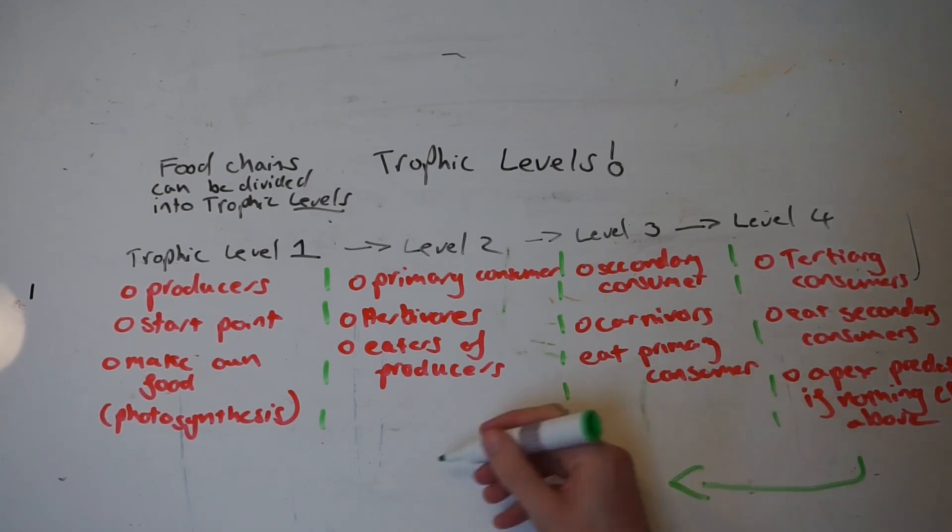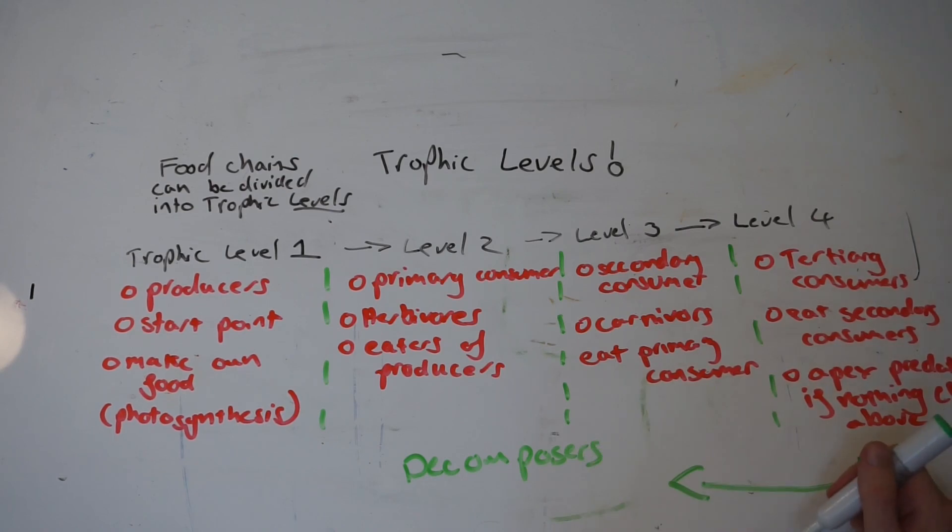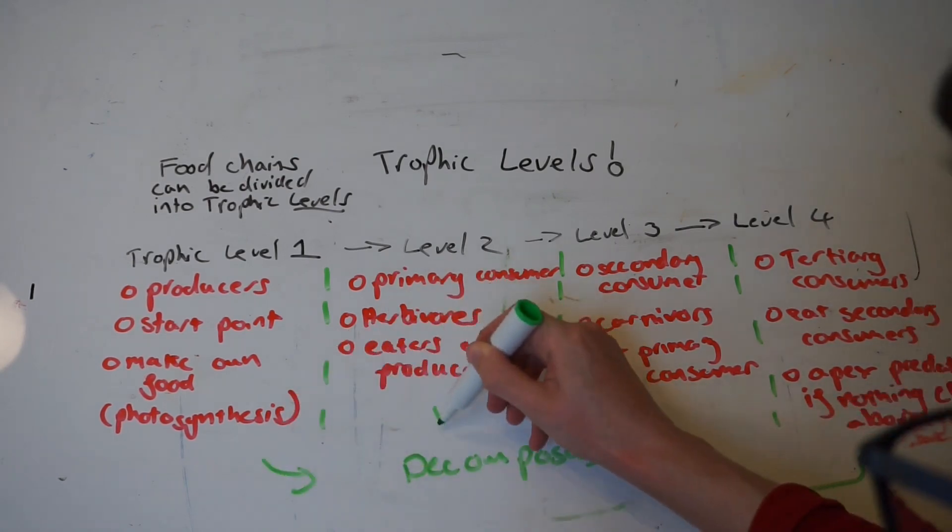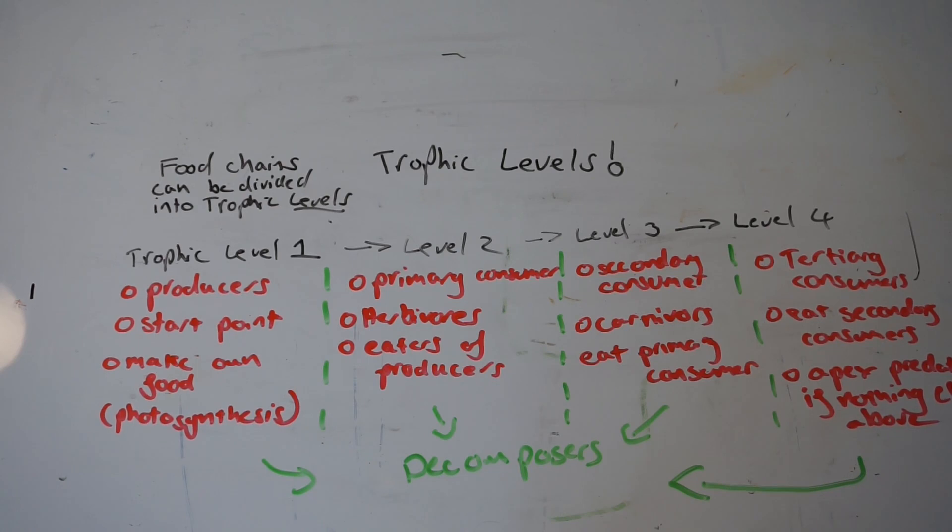It's also important to know that decomposers break down uneaten remains and waste from all these trophic levels. These decomposers tend to be bacteria and fungi, and they decompose either dead plant or animal material that is left after they've been eaten.